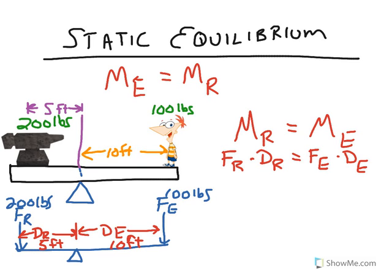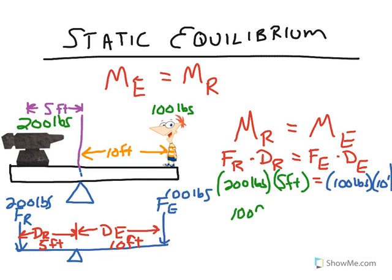The force of the resistance is 200 pounds. Distance is 5 feet. The force of the effort is 100 pounds. And its distance of the effort is 10 feet. 200 times 5 is 1,000 foot-pounds. 10 times 100 is 1,000 foot-pounds.